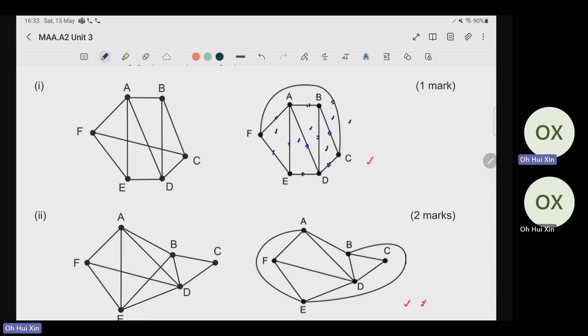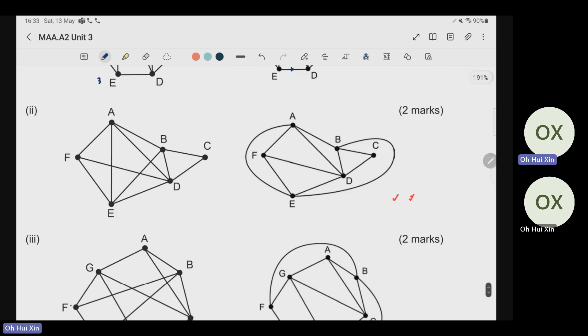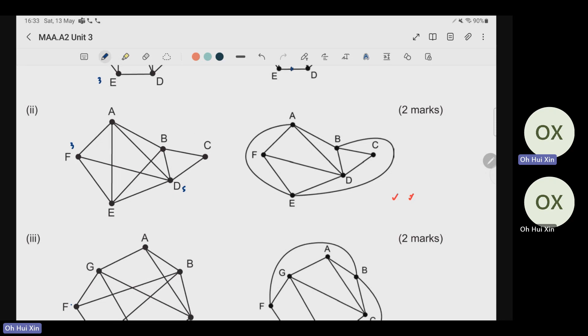When you try to look at the first one, this is 3, 3, 3, 3. Obviously, you have more than two odd vertices already. Then part 2, you have 3 here. This is even, even. This is also 3. This is 1, 2, 3, 4, 5, so that is 4. So this is even also. Then for C, it's 2. So graph 2 seems to be a semi-Eulerian graph.